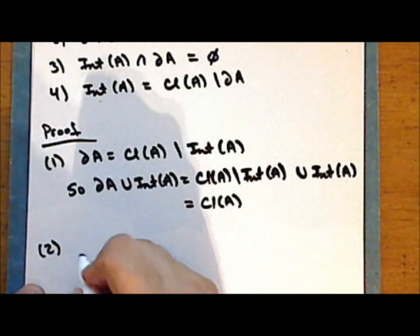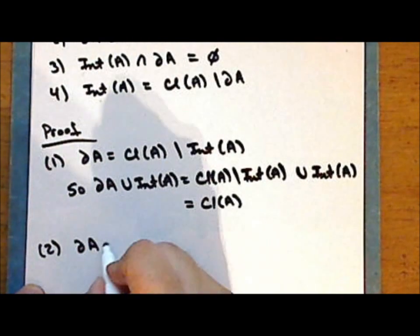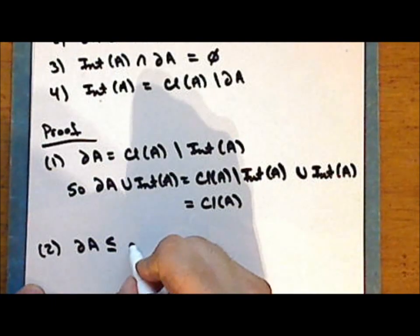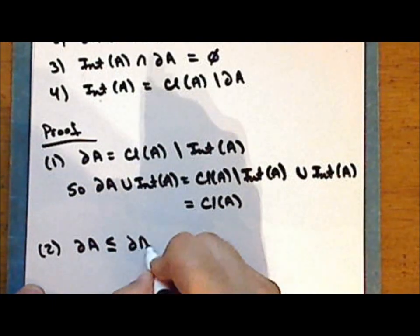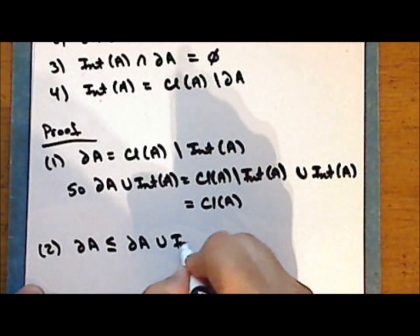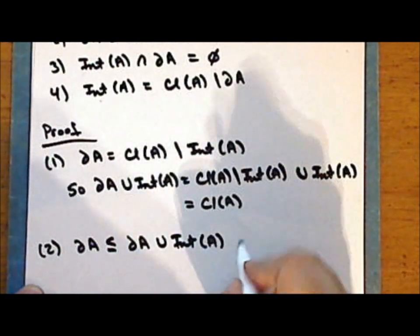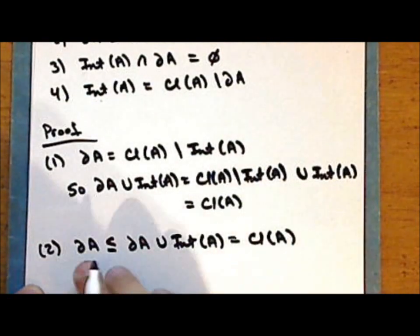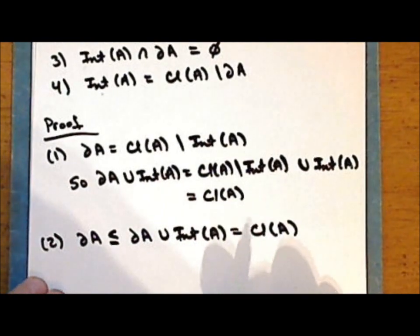Second statement: the boundary of A is a subset of any union which contains it. In particular, it is a subset of the union of the boundary of A with the interior of A, which we have just demonstrated is equal to the closure of A. And so the boundary of A is a subset of the closure of A.